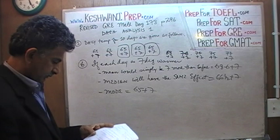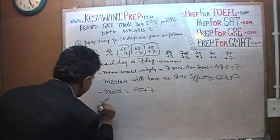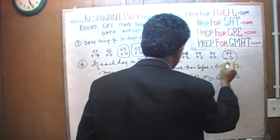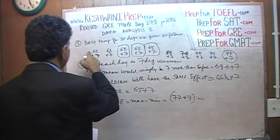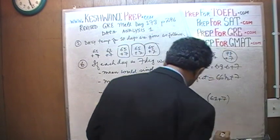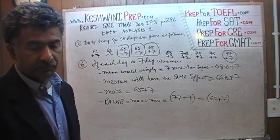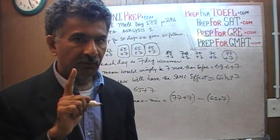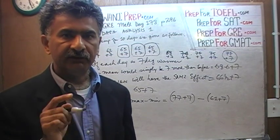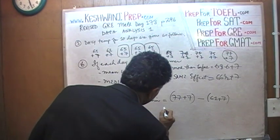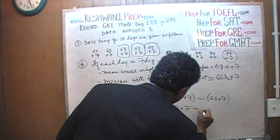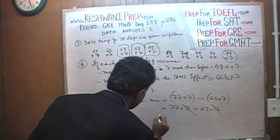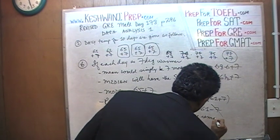What about the range? The range is maximum minus minimum. The maximum now is 77 plus 7, and the minimum now is 61 plus 7. Nothing is going to happen — the range will still be the same. The difference between the highest and lowest number will remain the same because they are both going up by the same amount. Mathematically: (77 + 7) minus (61 + 7) — the positive 7 and negative 7 cancel out, and the range remains 16.